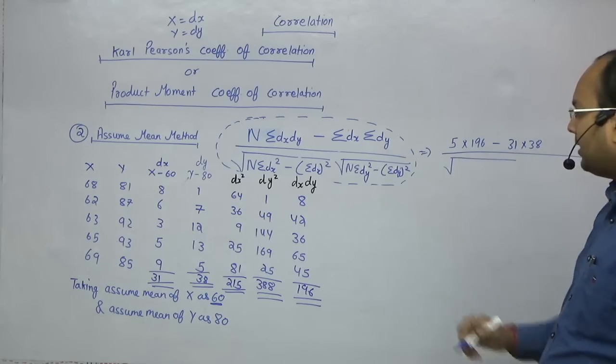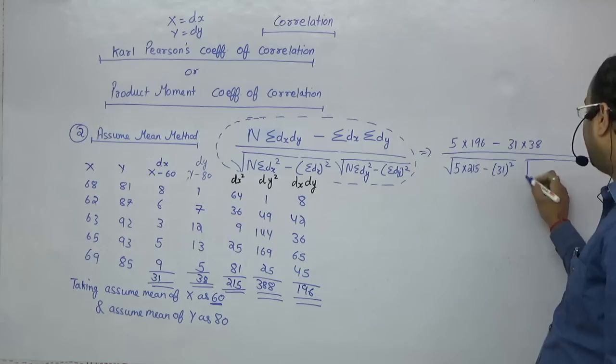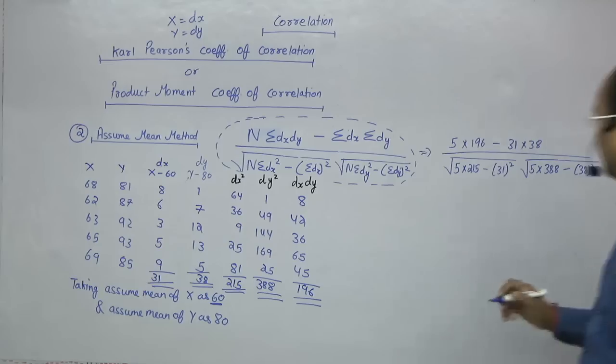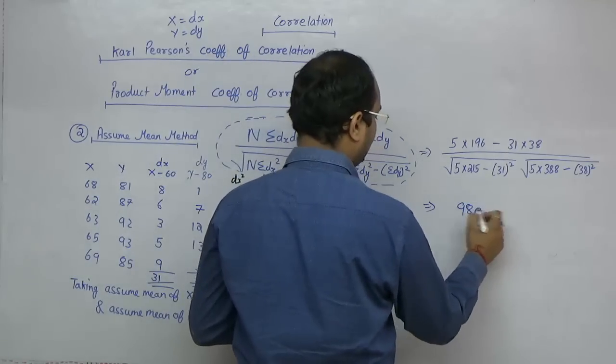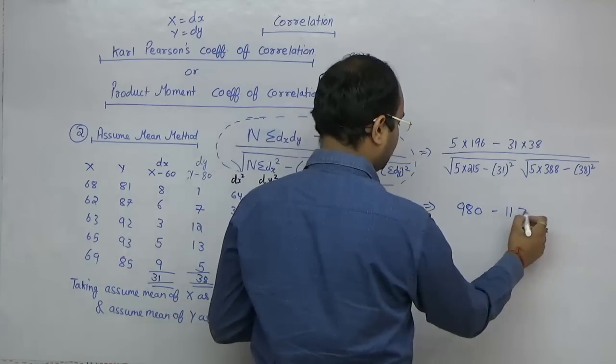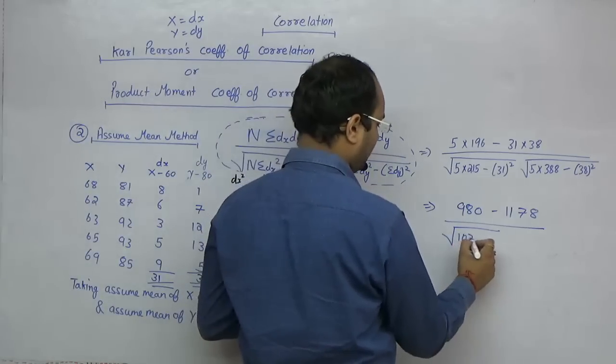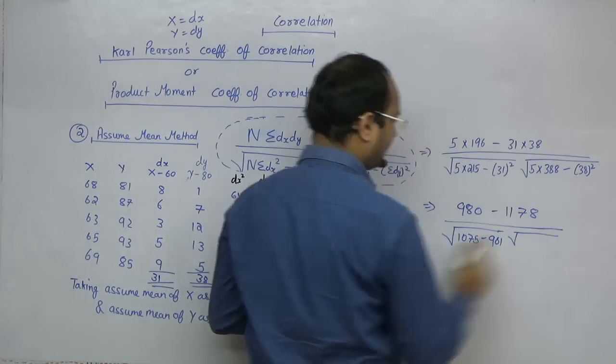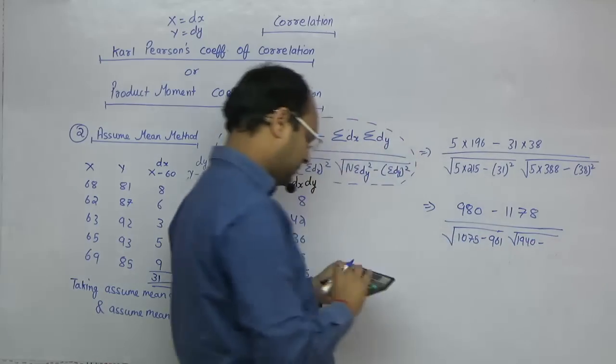Now put the values in the formula. n=5, sigma dx·dy=196, sigma dx=31, sigma dy=38. The formula is: [n·sigma dx·dy - sigma dx·sigma dy] / root of [(n·sigma dx² - (sigma dx)²) × (n·sigma dy² - (sigma dy)²)]. So: 5×196 - 31×38 over root of [5×215 - 31²] × [5×388 - 38²].